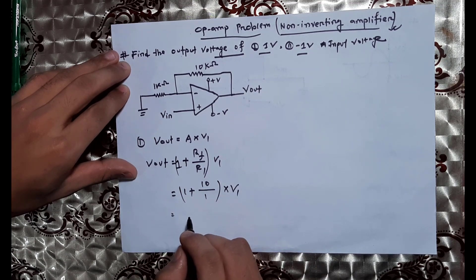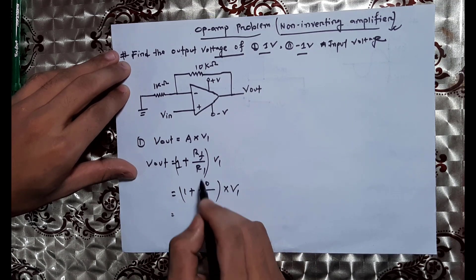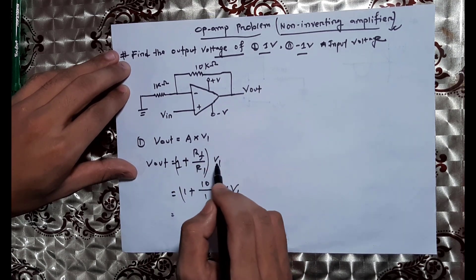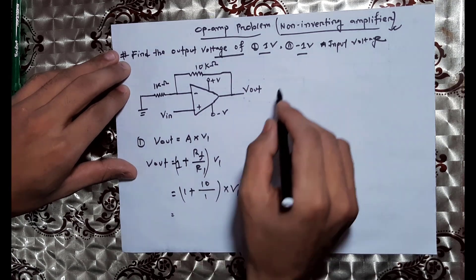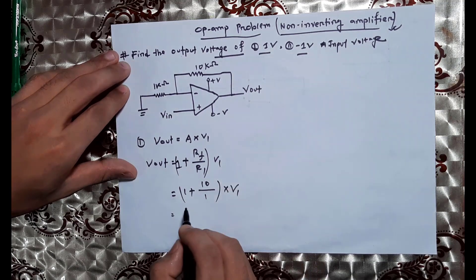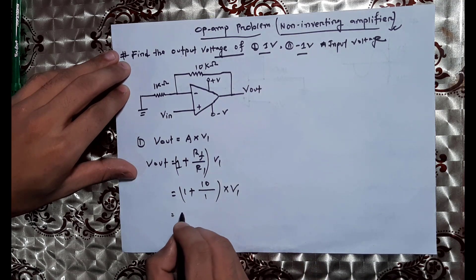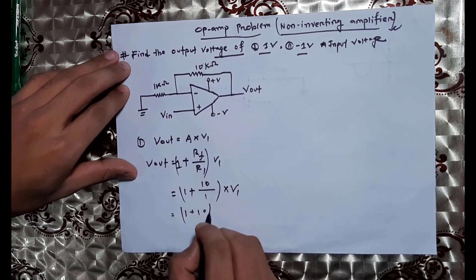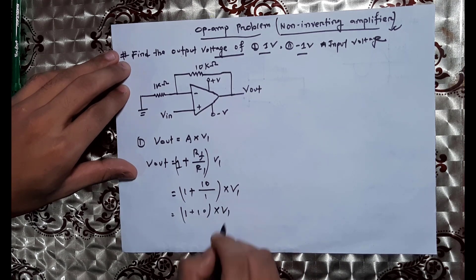The gain is equal to the gain part, and this is the input voltage V1. If we use the input voltage V1, we get: Vout equals 1 plus Rf divided by R1, into V1.